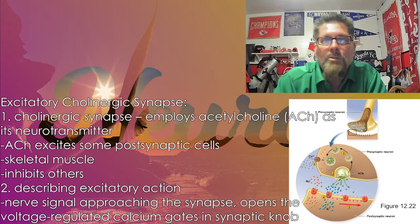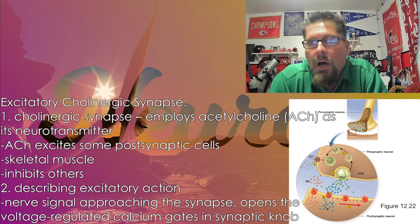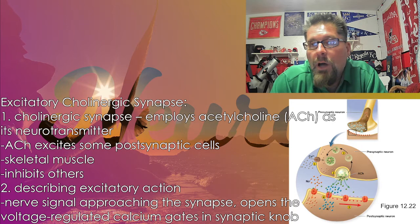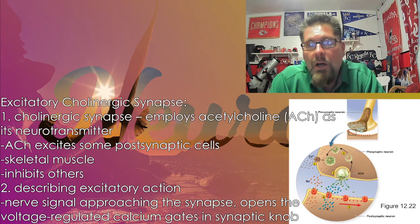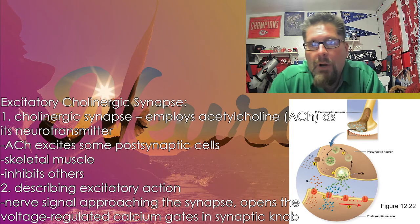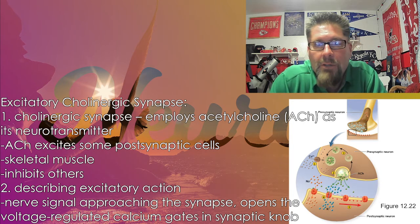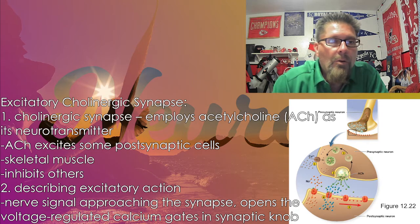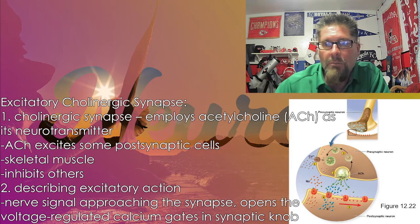Starting with the cholinergic synapse, ACh is going to be its neurotransmitter, and its main focus is getting skeletal muscles into action. There are others it can inhibit, but our focus here is the excitatory aspect of it. It's going to be releasing ACh through the synaptic knob.